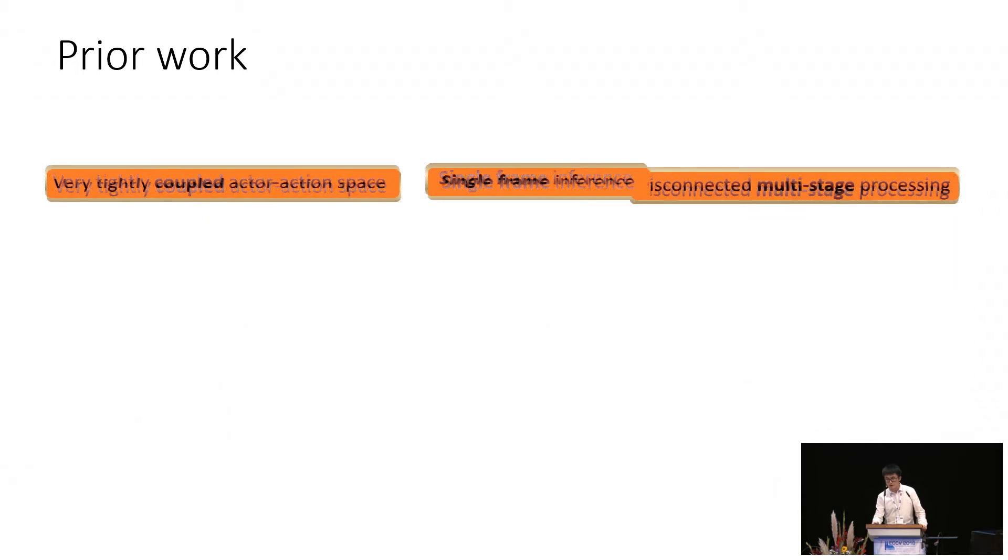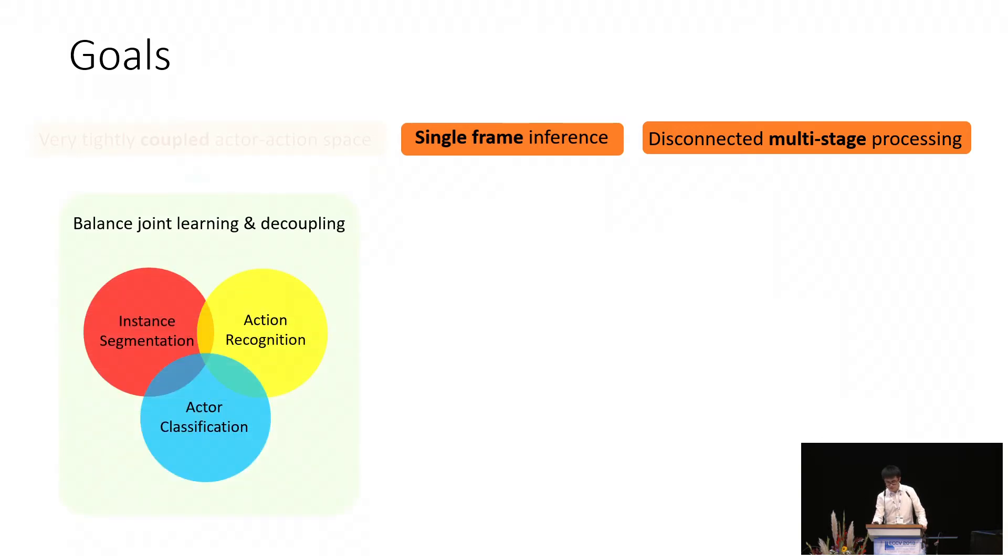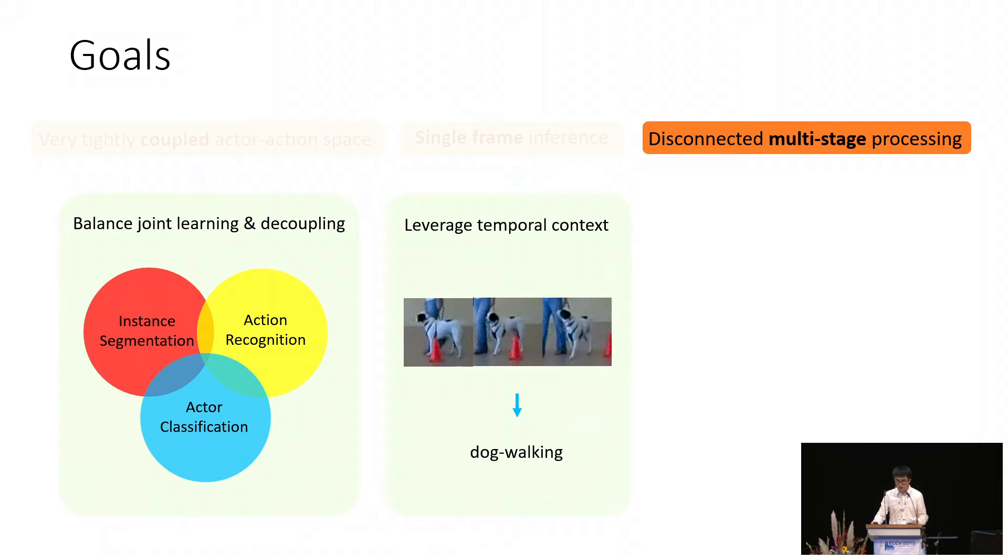We embrace these limitations of the prior work as the key design goals for our approach. First, instead of doing inference in a very tightly coupled joint space of actors and actions, we would like to balance joint multi-task training while decoupling the actor-action space. Multi-task here is important because our task can be solved by three subtasks: instance segmentation, action recognition, and actor classification. With the joint multi-task training, each subtask can benefit from the others. But also, we want to balance such joint training with decoupling these tasks to enable easier transfer to new actor and action categories.